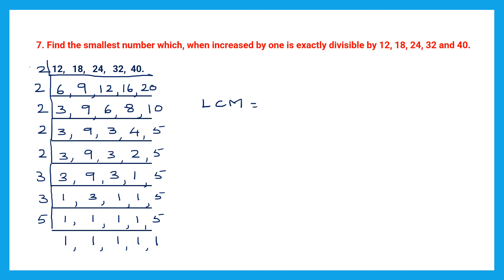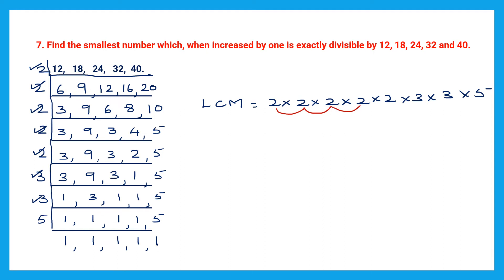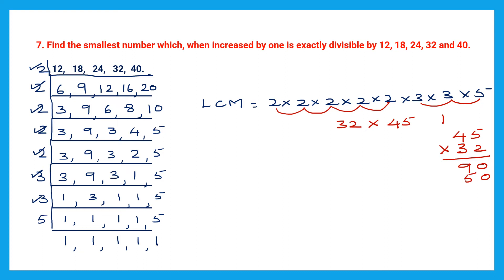LCM equals — let me take all the 2s: 1, 2, 3, 4, 5 twos. And the 3s: 3 × 3. And × 5. So multiplying: 2 × 2 = 4, 4 × 2 = 8, 8 × 2 = 16, 16 × 2 = 32, 32 × 3 × 3 = 9, and 9 × 5 = 45. Now 45 × 32: 2 × 5 = 10 carry 1, 2 × 4 = 8 + 1 = 9, giving 90. Then 3 × 5 = 15 carry 1, 3 × 4 = 12 + 1 = 13. Adding: 9 + 5 = 14 carry 1, 3 + 1 = 4. Result is 1440.